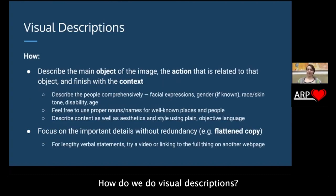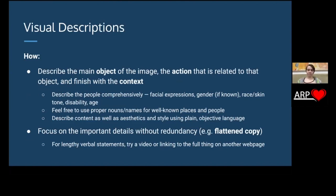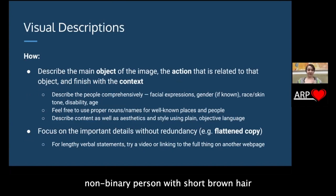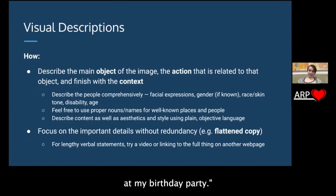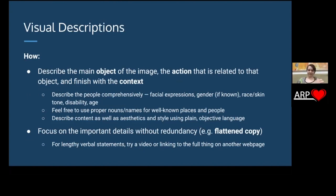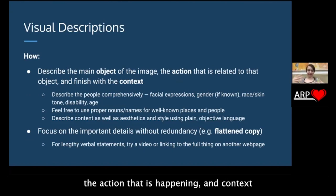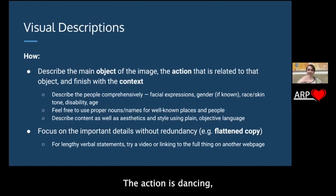How do we do visual descriptions? The main framework is object, action, context. So we could say: Sox Whitmore, a white non-binary person with short brown hair, dancing on the beach at my birthday party. You've described the object of the image — the main focus — the action that is happening, and the context. Sox is the object, the action is dancing, the context is beach birthday party.